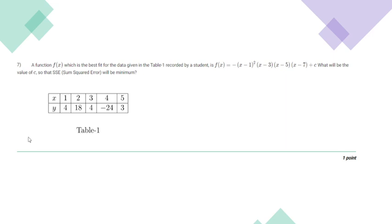Question number 7 states that a function f(x) is given based on the values in this table. We have to find the value of c such that the sum of squared errors is minimum.